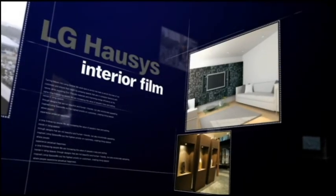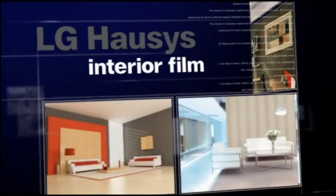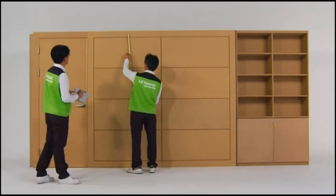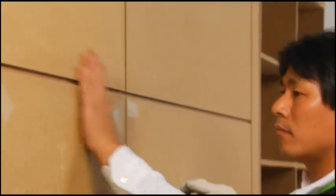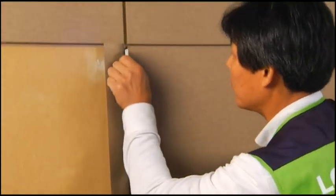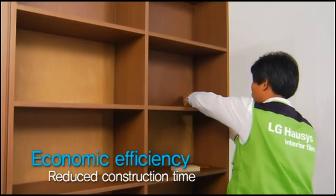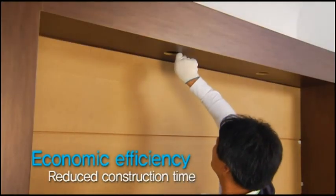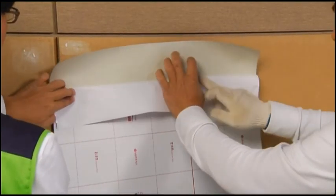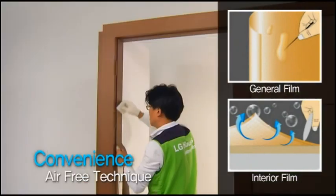Our interior films have a variety of applications. LG Hausis Interior Film is especially easy to use, change and repair, greatly reducing construction time and increasing economic efficiency. It is easy to install because it has an adhesive coating on the back surface and uses an air-free technique that prevents bubbling.